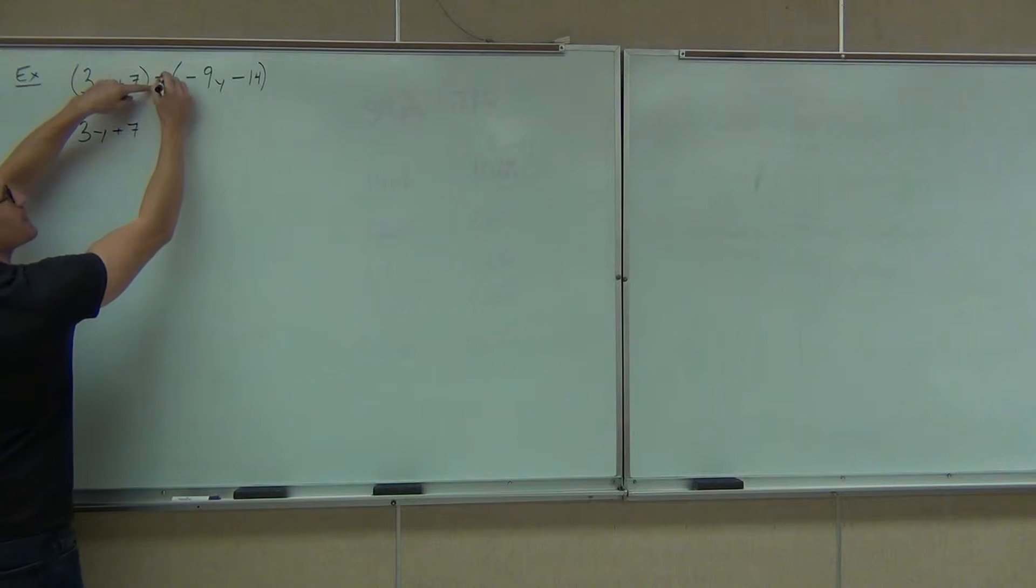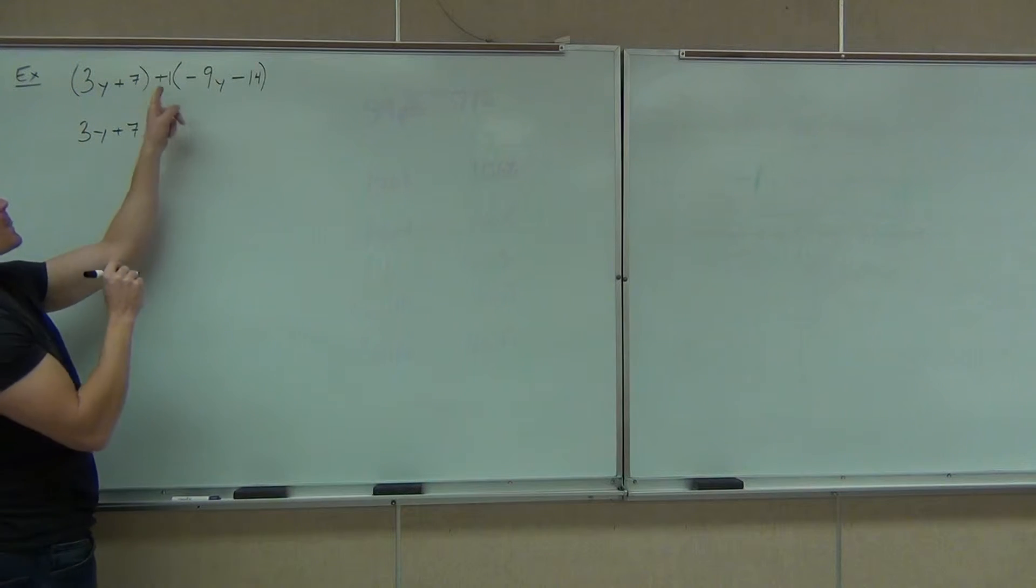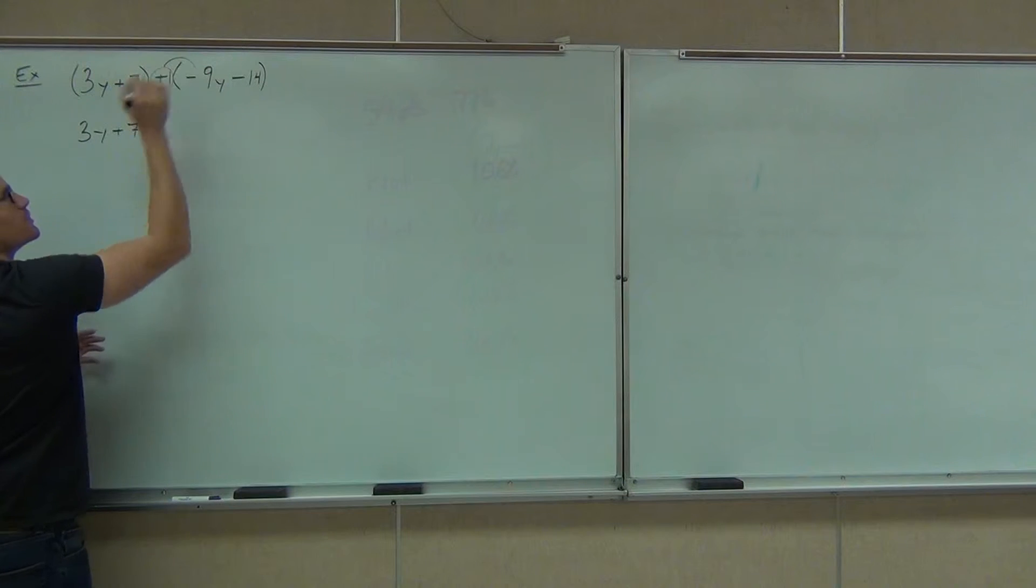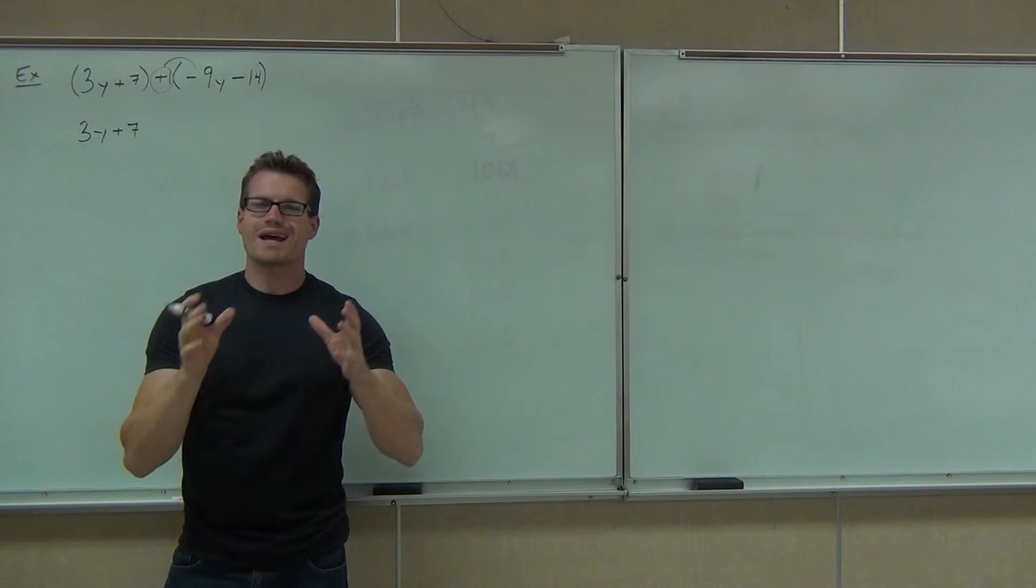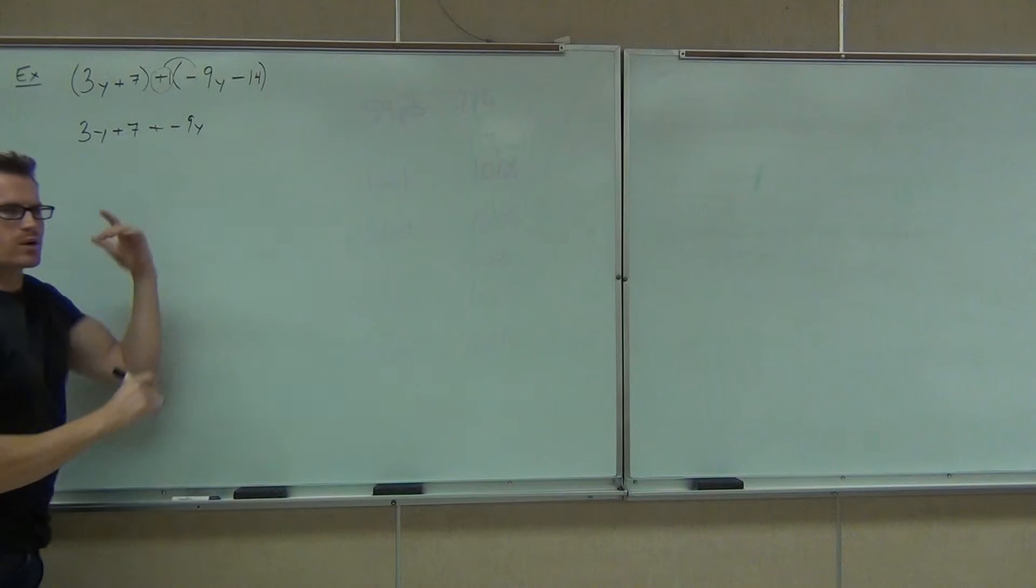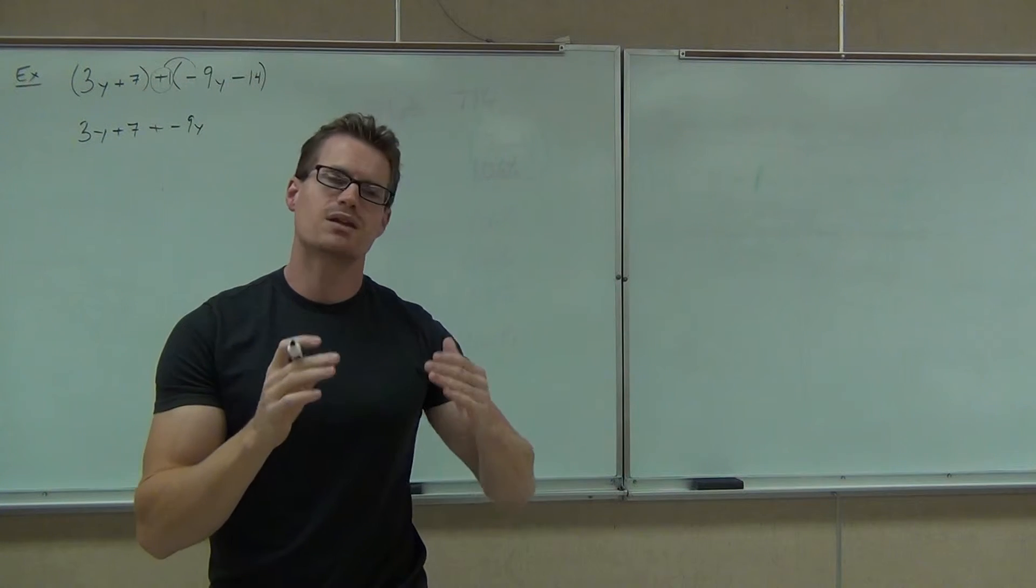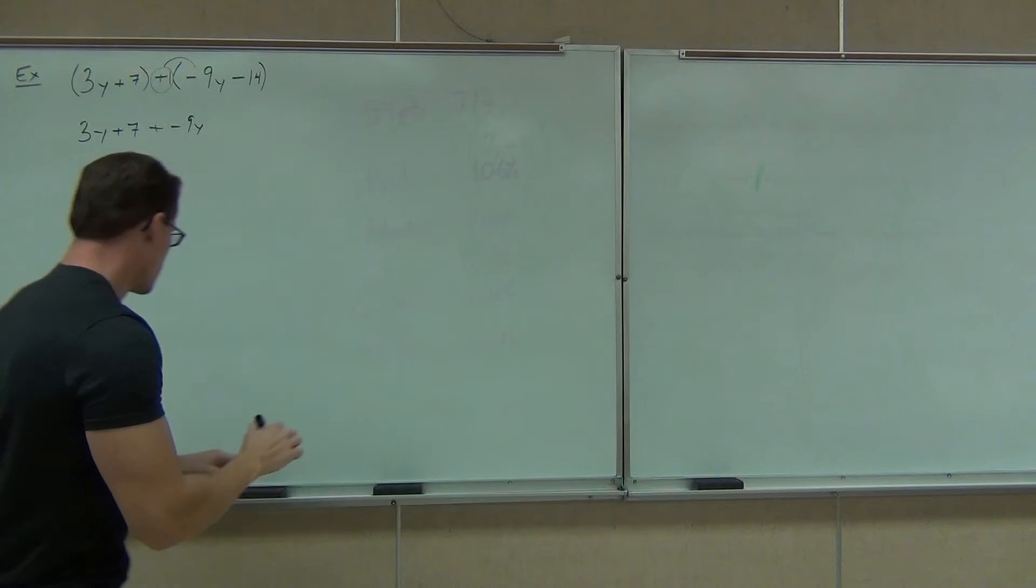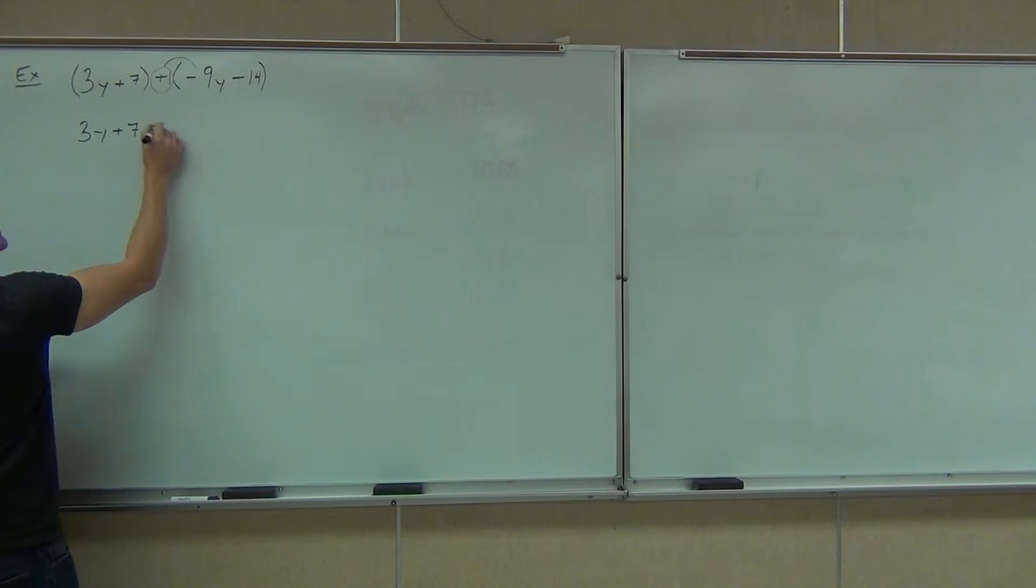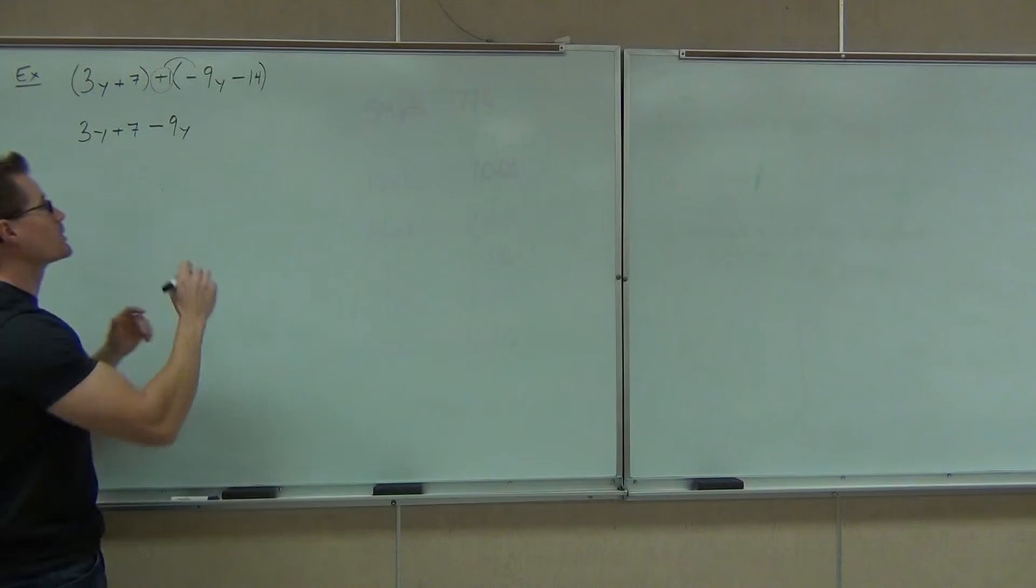So we notice on the first one, really we have just a simple positive 1 out there. And if we distribute, nothing's going to happen to those terms. So when we get rid of our parentheses, we'll have 3y plus 7 from the first set of parentheses. Now the second set of parentheses. Again, we really just have a positive 1 right in front. Are these signs going to change? No. So when I distribute a positive 1, which you can show that or not, notice how you're going to get negative 9y still. So what I don't want from you, I don't want to see plus, minus 9y. I don't want to see those two signs. Those signs take care of themselves. So instead of writing plus, minus, or plus, negative 9y, we can just write a subtraction sign. And then minus 14.